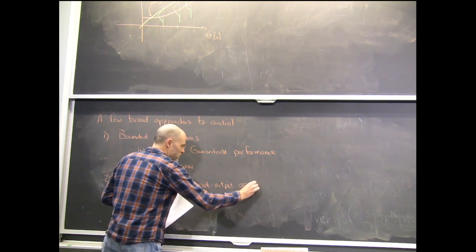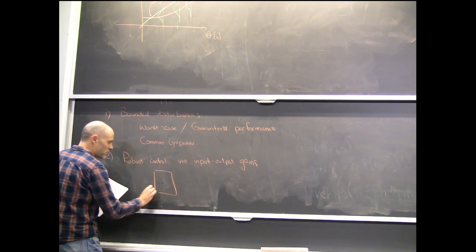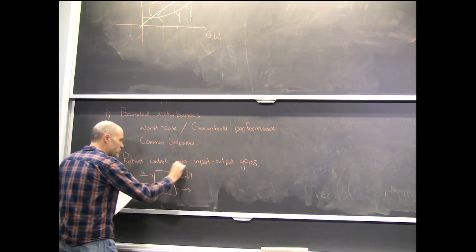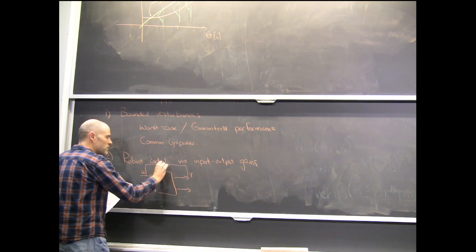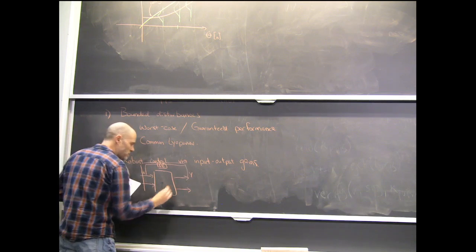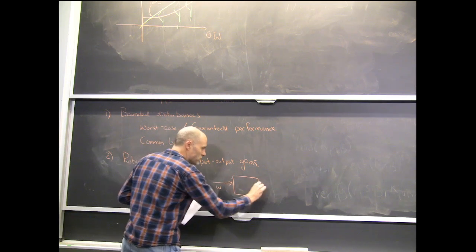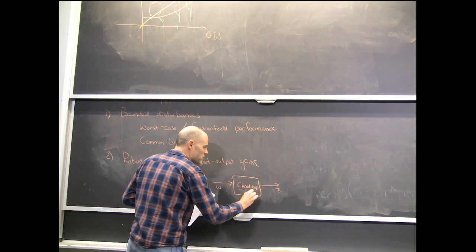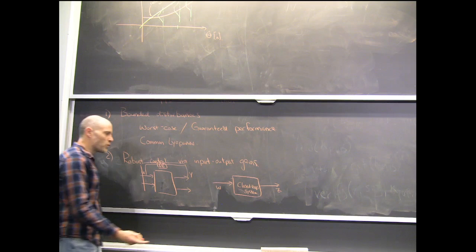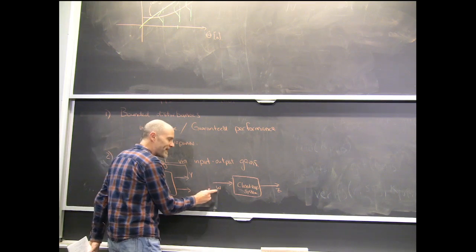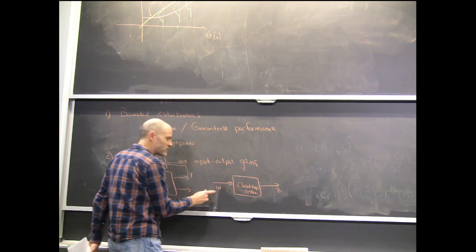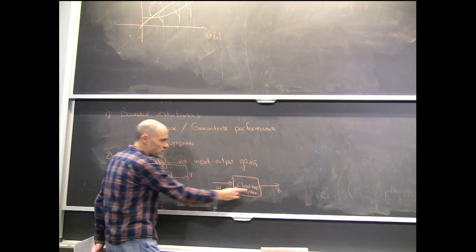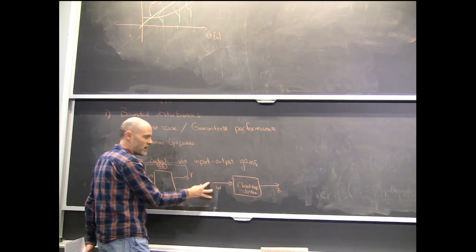The input-output gains approach goes farthest with linear systems. You think about the total closed-loop map from disturbance input W to some performance output Z, with a feedback controller in the loop. What you'd like to say is that the distributions you get in Z are proportional to the magnitude of the distributions in W — if W is zero, Z should go to zero; if W has high energy, Z responds proportionally. We'll show ways to think about this and develop these tools in the next few lectures.